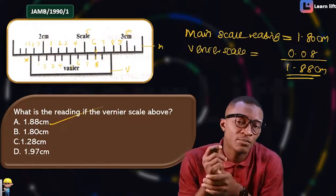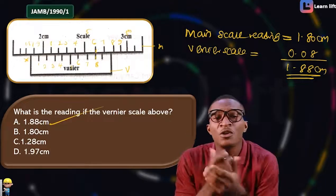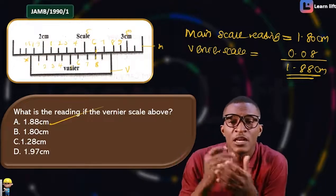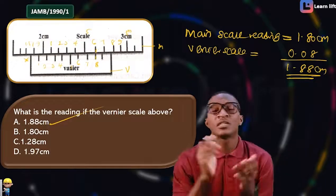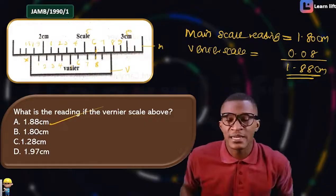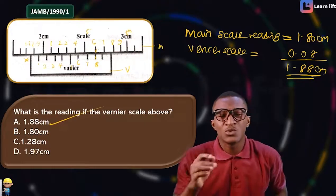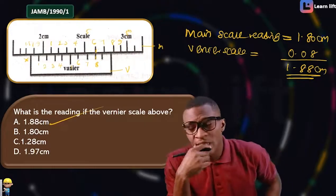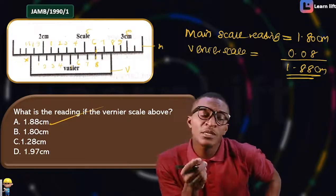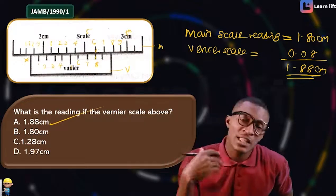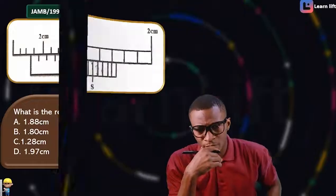Very simple! I got the reading of the main scale, got the reading of the vernier scale, and added them together. If you don't fully understand yet, let's see another example.